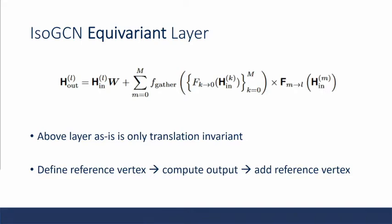However, this layer that we've defined as-is is only translation invariant. So in order to make it equivariant, we define the reference vertex, we compute the output of this layer, and then we add the reference vertex back in.